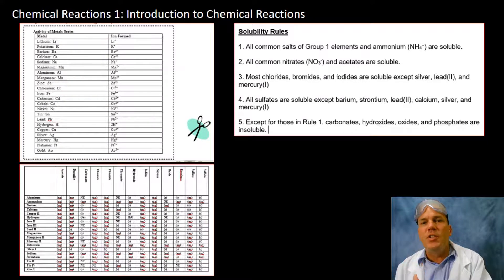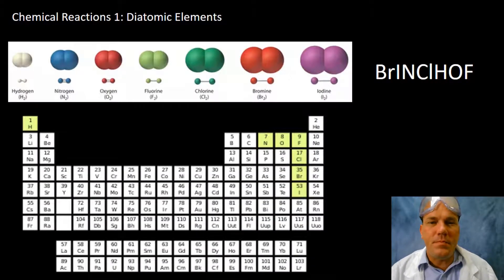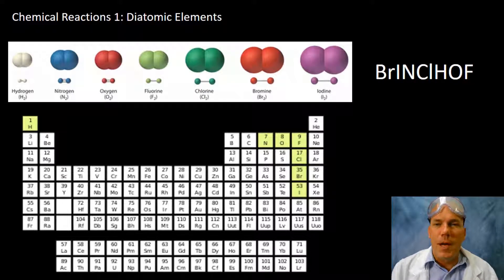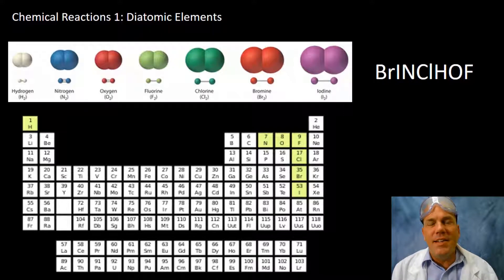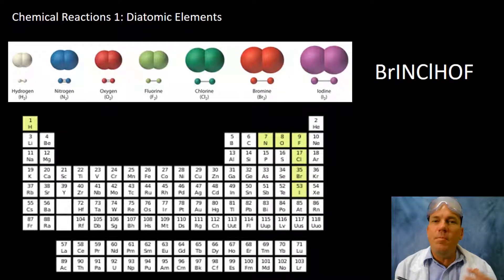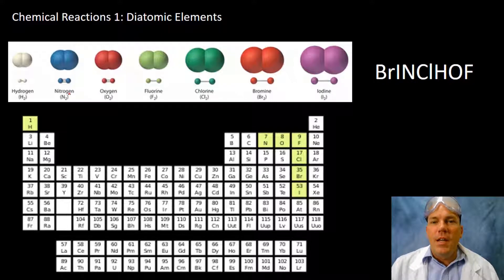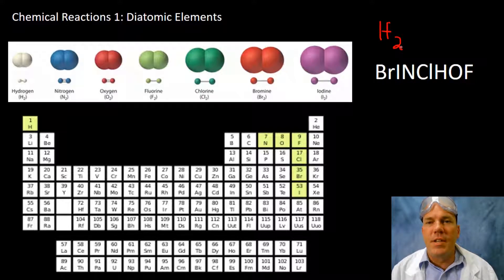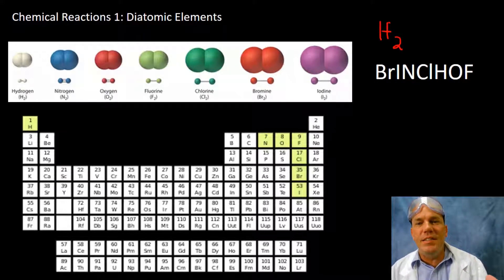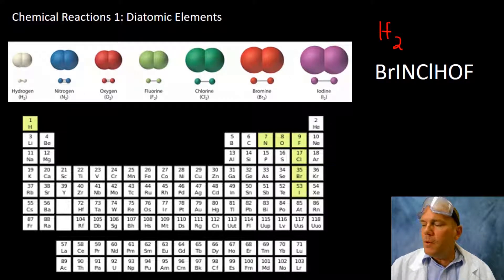The first thing I want to talk about is diatomic elements — these are elements found in a diatomic state in nature. The prefix 'di' means two. This is the most stable configuration for these seven elements, so they are not found alone in nature. You are not going to find just a hydrogen atom; it will always be in diatomic form as hydrogen gas. Anytime you're writing and balancing chemical reactions and come across these seven elements, remember the acronym BRINKELHOFF.